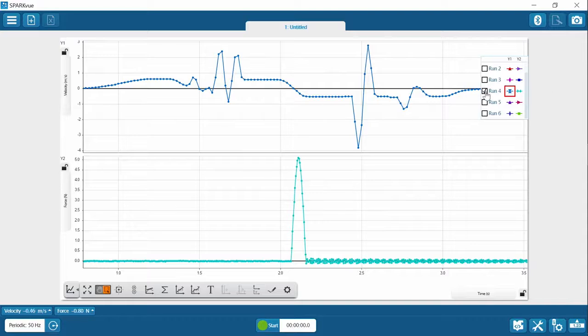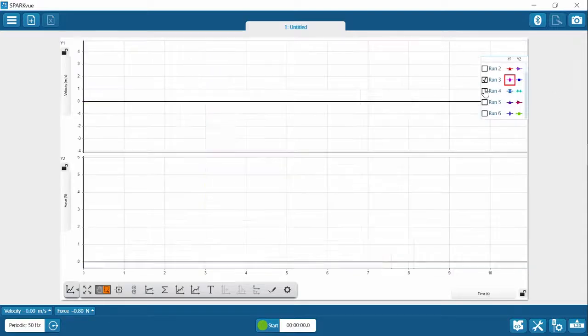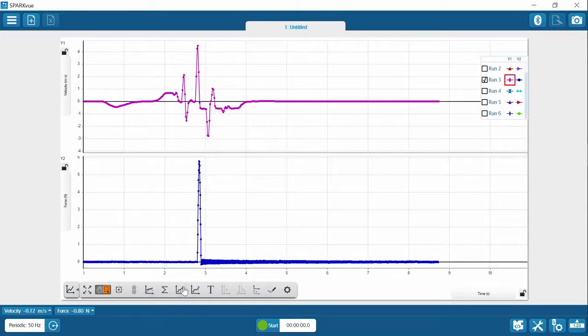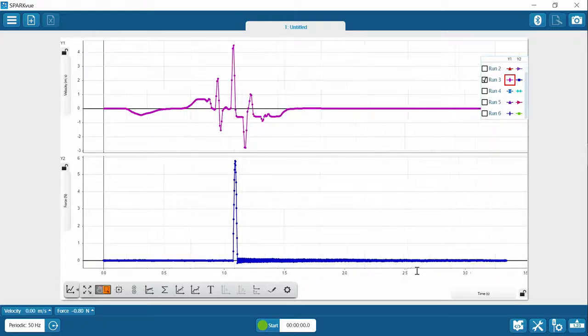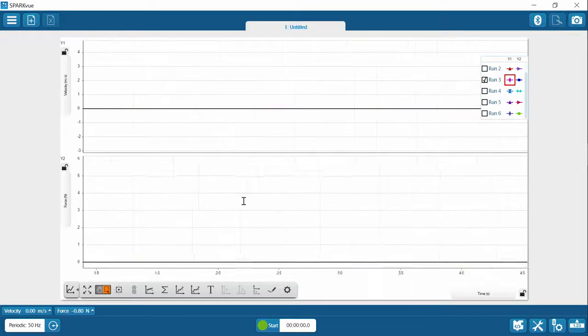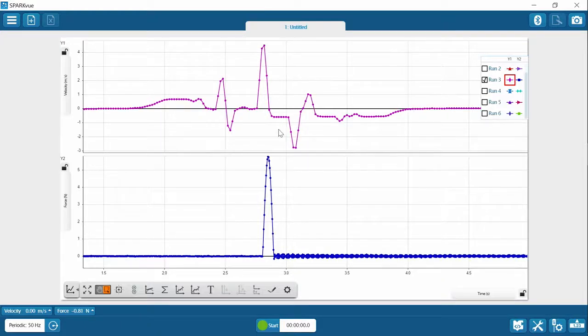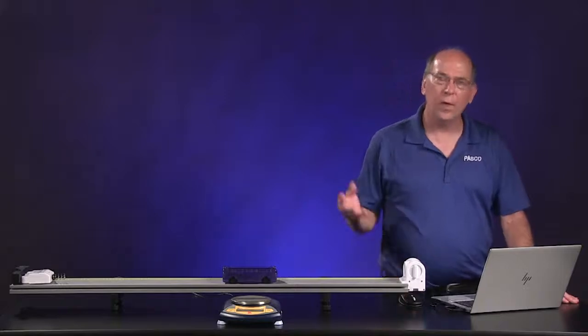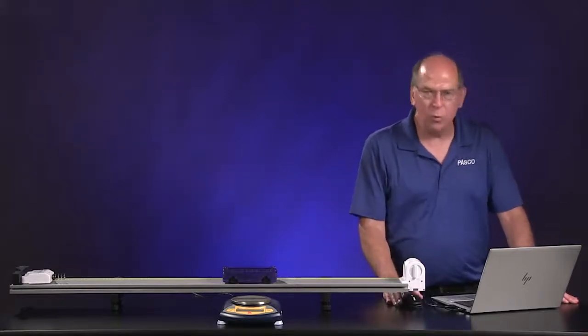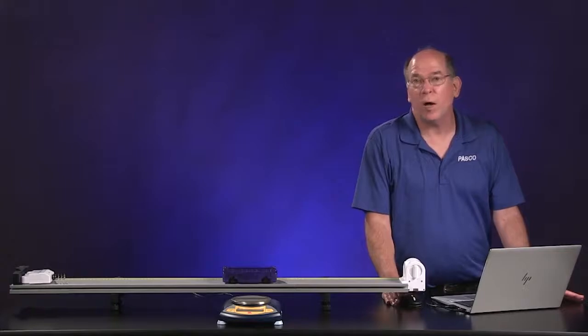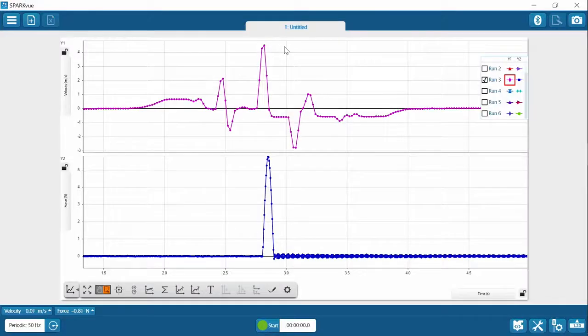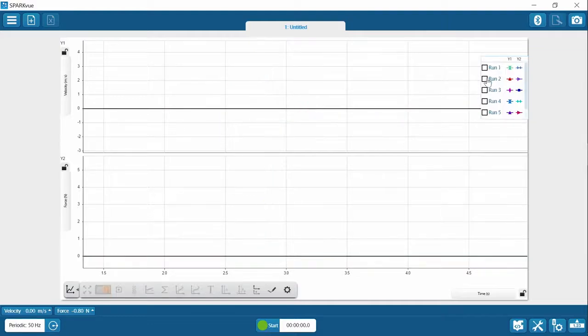And then run three. Uh-oh, looks like I didn't keep my hand out of the way there. And we know that because here's where the collision was. This looks like the velocity afterwards, something like negative 0.6, but beforehand it's above four. So that was my hand in the way. So you can ignore, we only need five trials for the lab, so you can ignore run three or we could go in and delete it. Let's check run two first before we do anything.